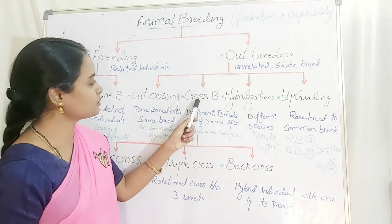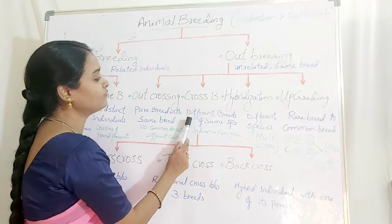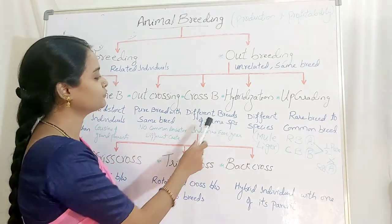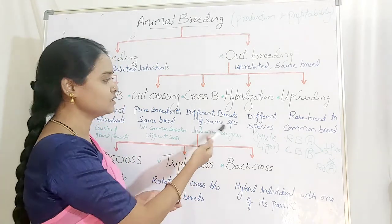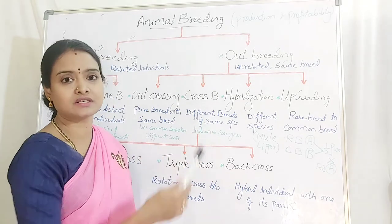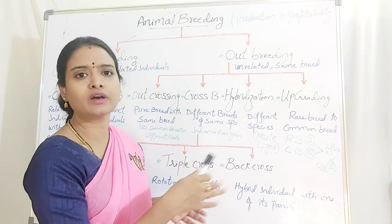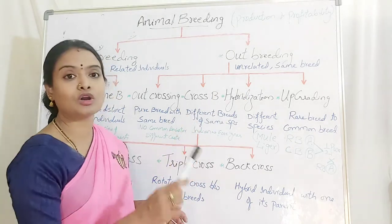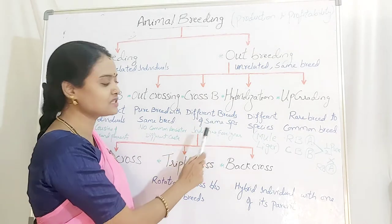In crossbreeding, you have different breeds of the same species. For example, all humans belong to the same species, but a cross between different breeds — like an Indian getting married to an American or any other foreigner — is called crossbreeding: different breeds of the same species.